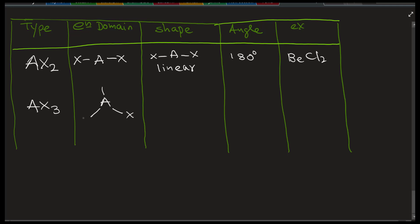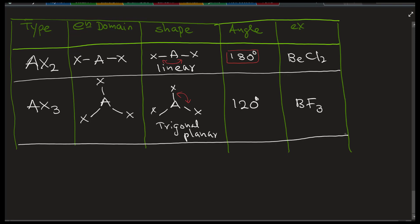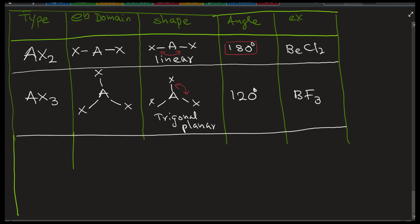So AX2 goes into the next level which is AX3 type. That means the central atom A and the X's are surrounded, but it has a trigonal shape. But it's flat, so it's called the trigonal plane. The bond angle between the XAX is 120 degrees because it's 360 cut into 3.